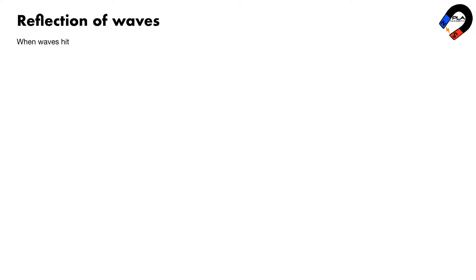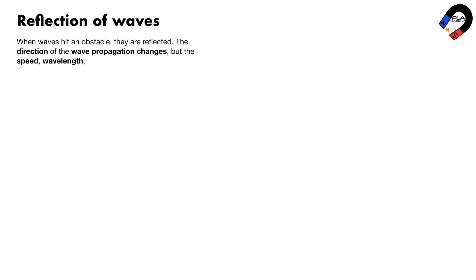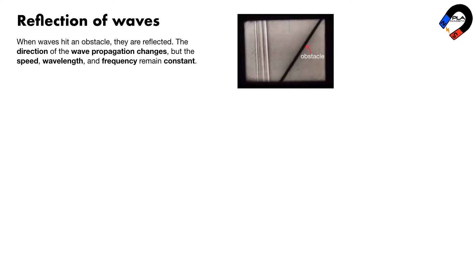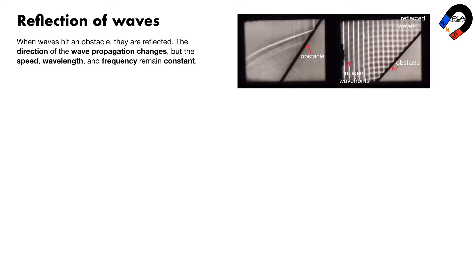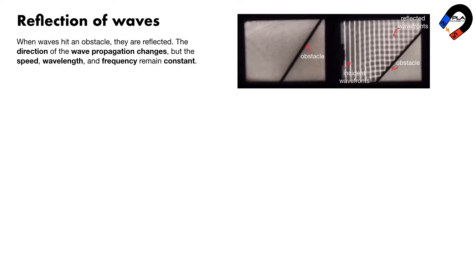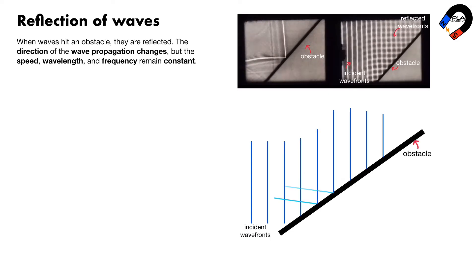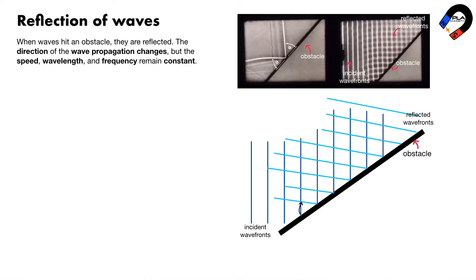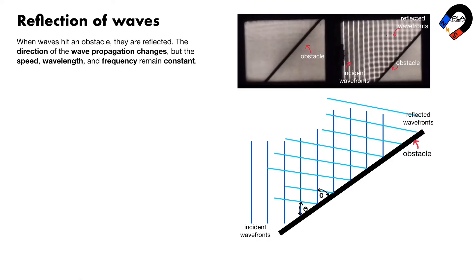Reflection of waves: when waves hit an obstacle they are reflected. The direction of wave propagation changes, but the speed, wavelength, and frequency remain constant. In a ripple tank demonstration, the incident wave fronts hit the obstacle creating reflected wave fronts. The angle between the incident wave fronts and the surface of the obstacle is equal to the angle between the reflected wave fronts and the surface of the obstacle.